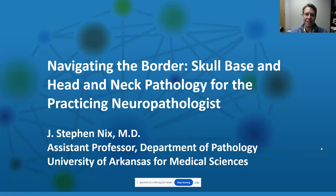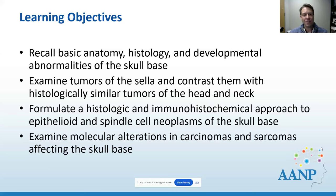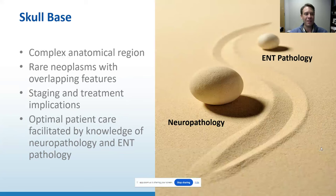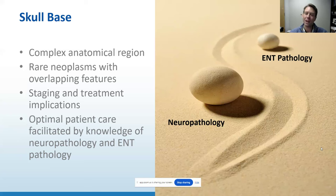Today we're going to be talking about the skull base, and the emphasis of this talk is going to be things relevant to neuropathology practice. Just a couple of weeks ago, a rhabdomyosarcoma from the nasopharynx was handled by the neurosurgical team. The idea is to have a broad overview touching on things helpful for daily practice, either because they have histologic similarities or may fall into the differential. The skull base is a complex anatomic region with many rare neoplasms, standing on the border between neuropathology and ENT pathology. Staging and treatment implications are made based on skull base involvement, and optimal patient care is facilitated by bringing knowledge from both sides.